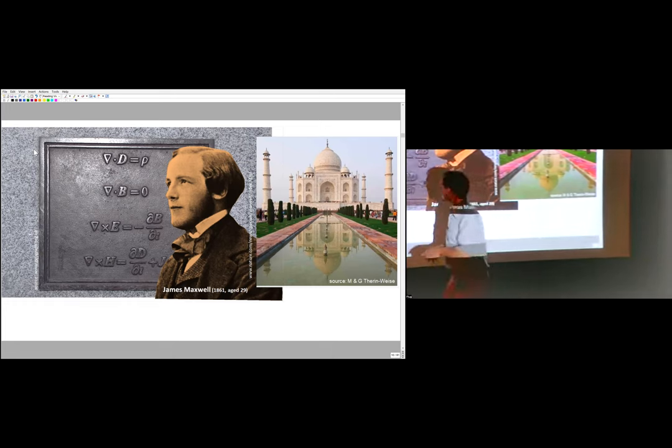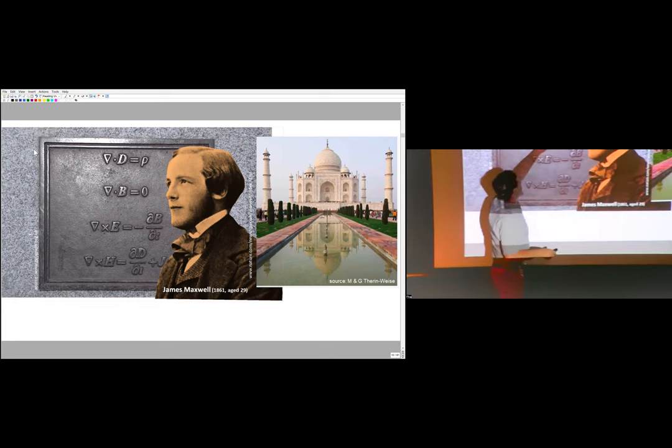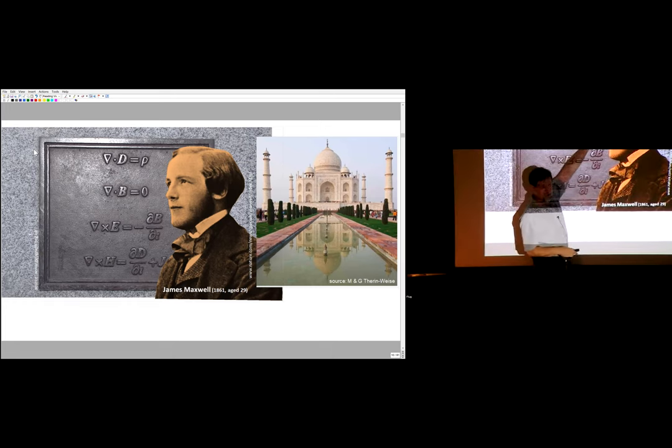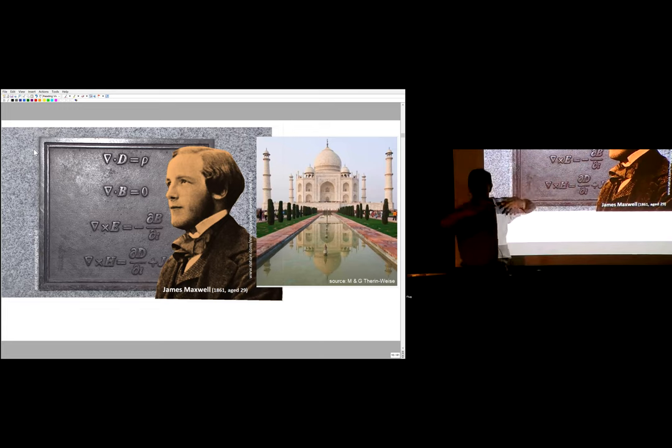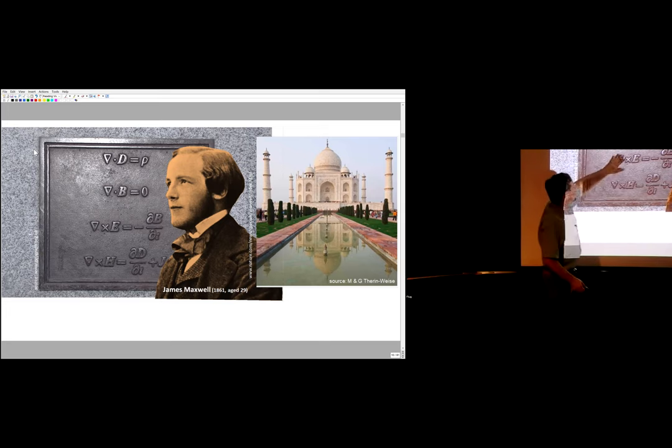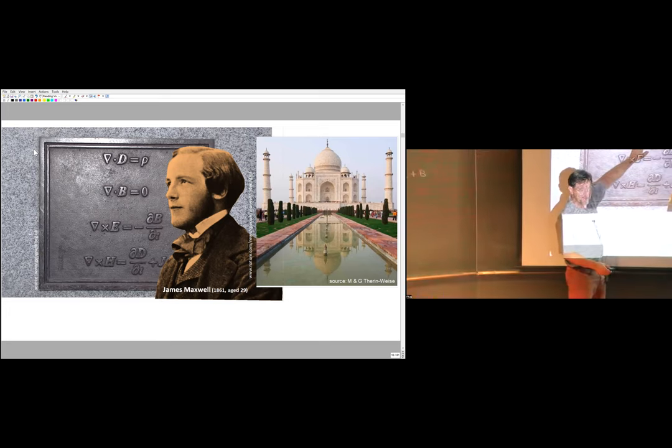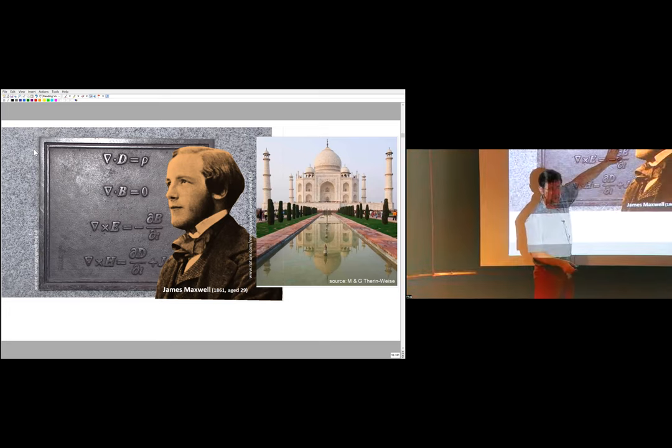When we look at Maxwell's equations, we feel the same way as physicists. So what do they tell us? The first one tells us that if you have some electric charge in the universe, then there are electric fields radiating out from it. The second one tells us that there would be magnetic fields radiating out from magnetic monopoles, but we don't think there are any, or at least we haven't found any yet.